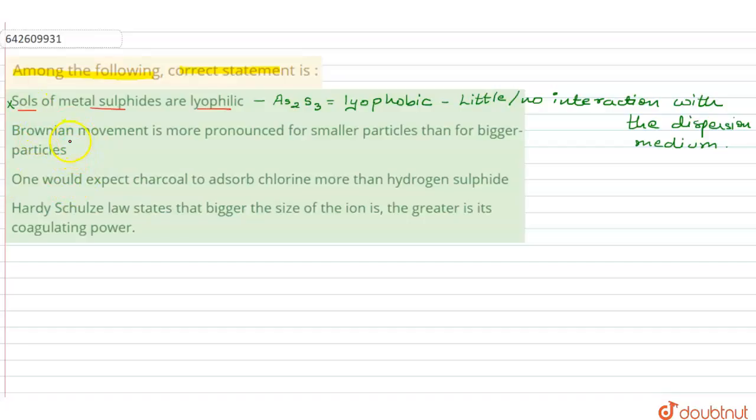The second statement says that the Brownian movement is more pronounced for smaller particles than for bigger ones. Now what about the Brownian motion or the Brownian movement? The Brownian movement arises...